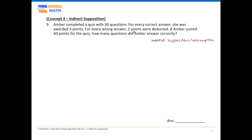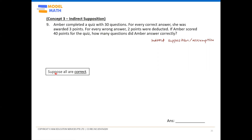For this type of supposition-with-penalty question, the first thing we always do is suppose the most positive outcome. That means I suppose all 30 questions were answered correctly — a perfect score. So the first sentence to write down is: suppose all are correct. The word 'suppose' means to pretend or imagine she got everything correctly.